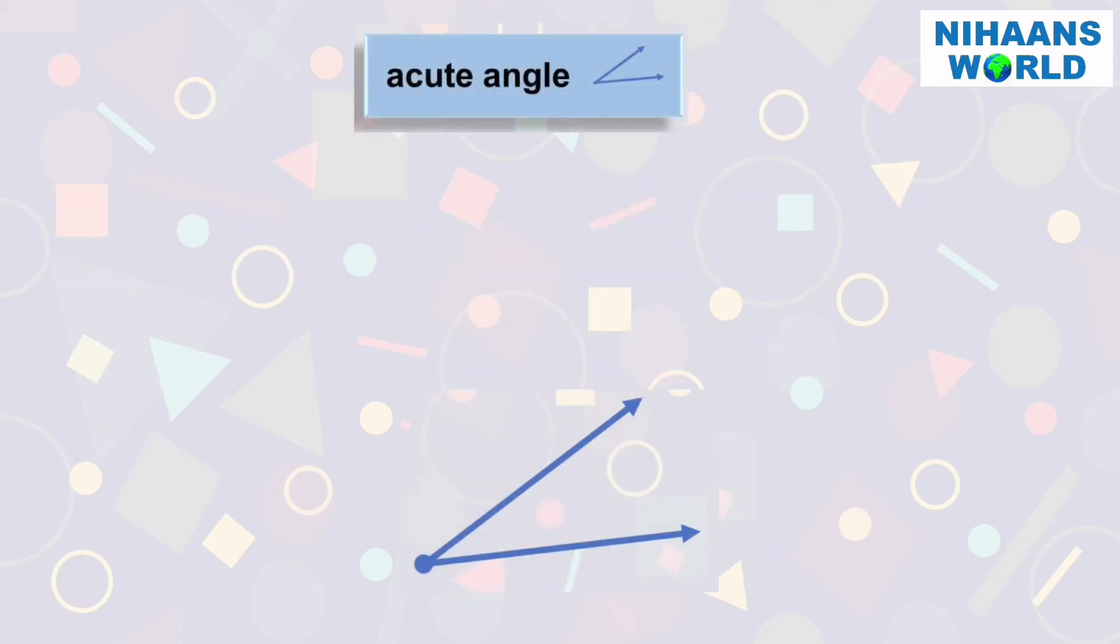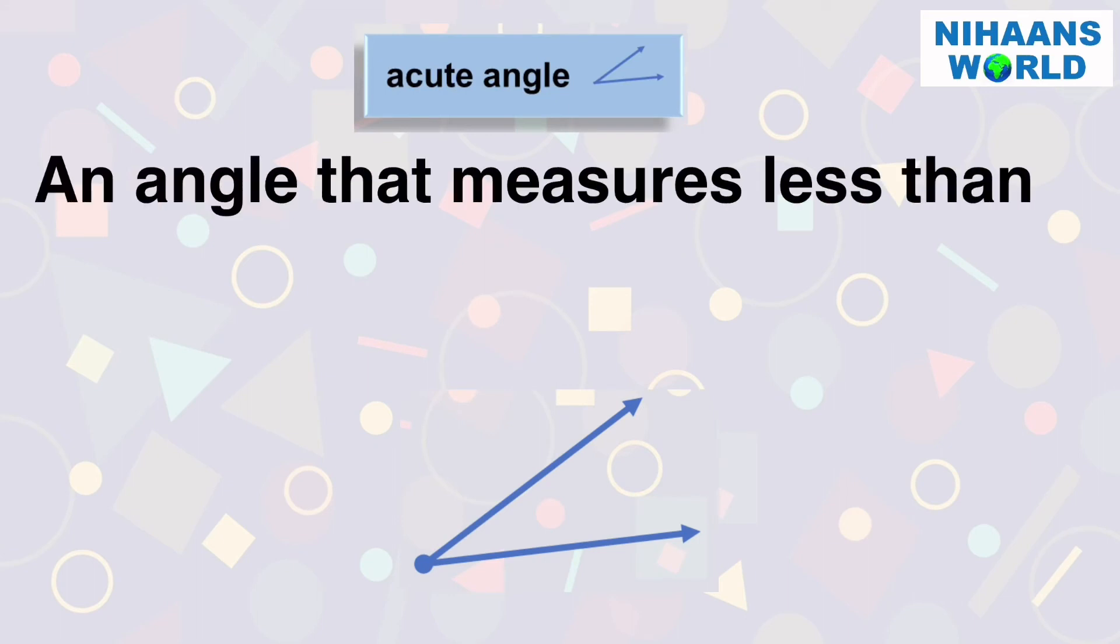What is an acute angle? An angle that measures less than 90 degrees.